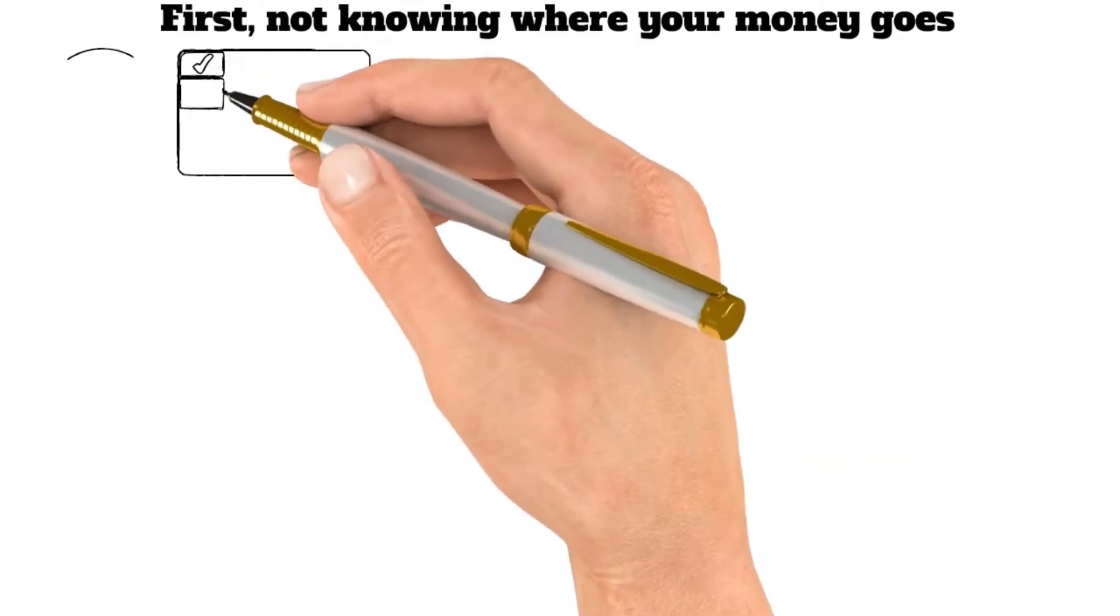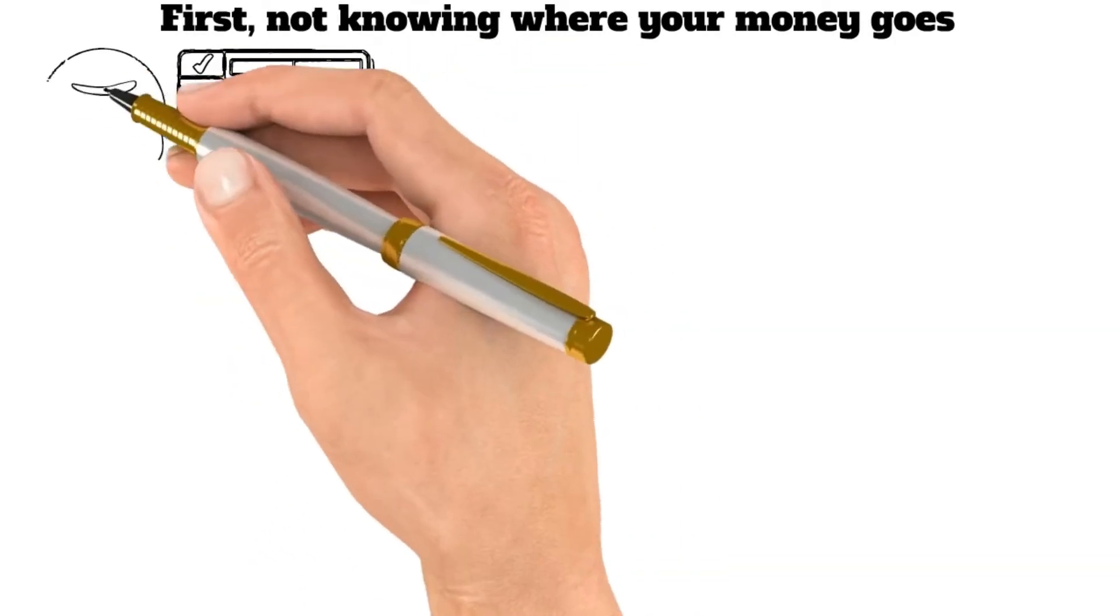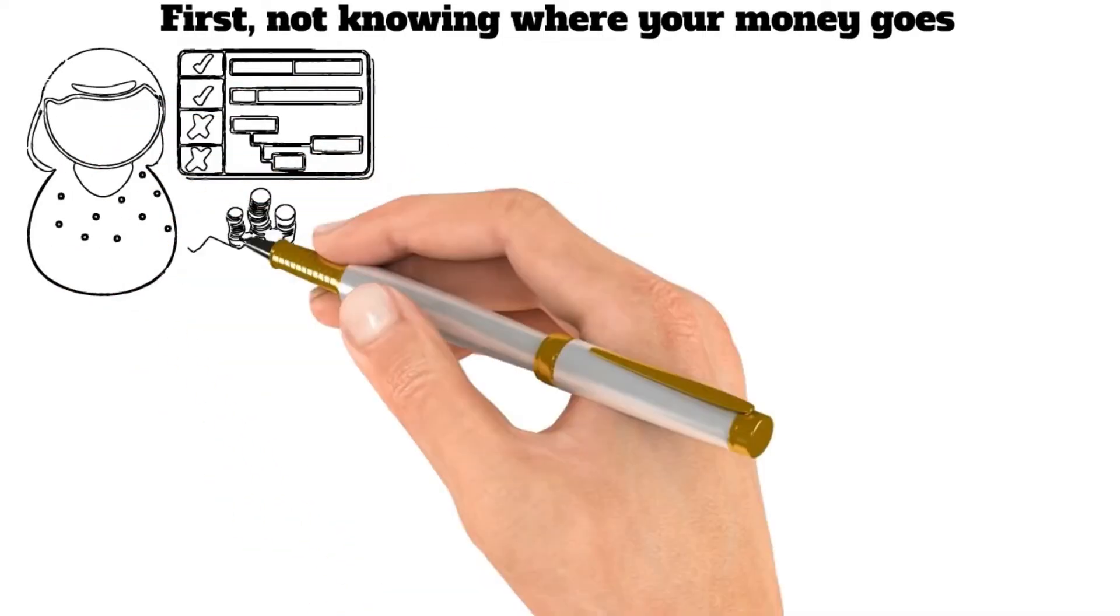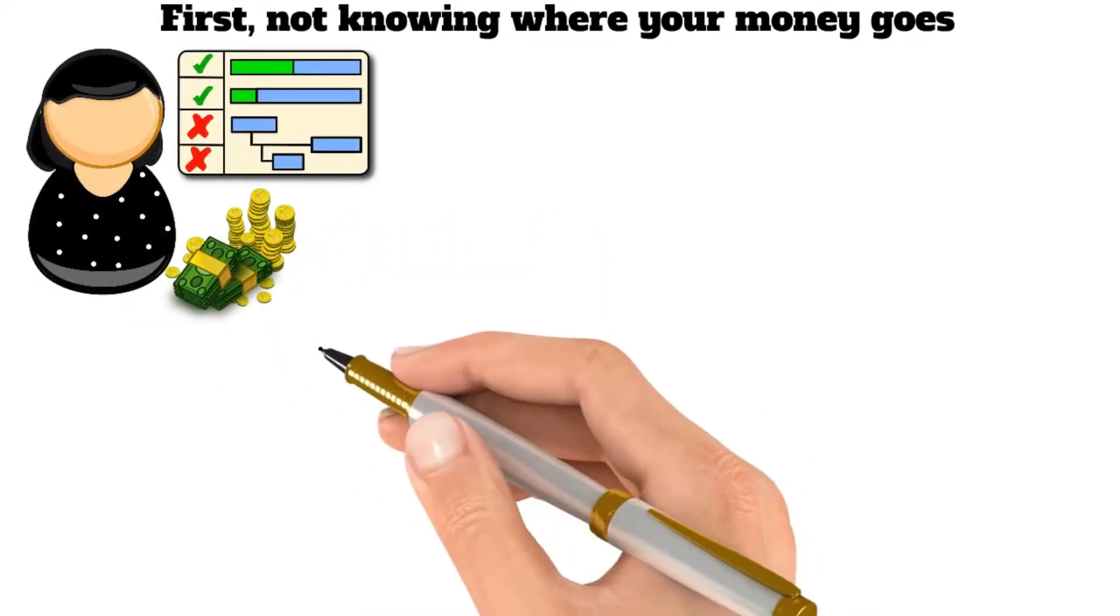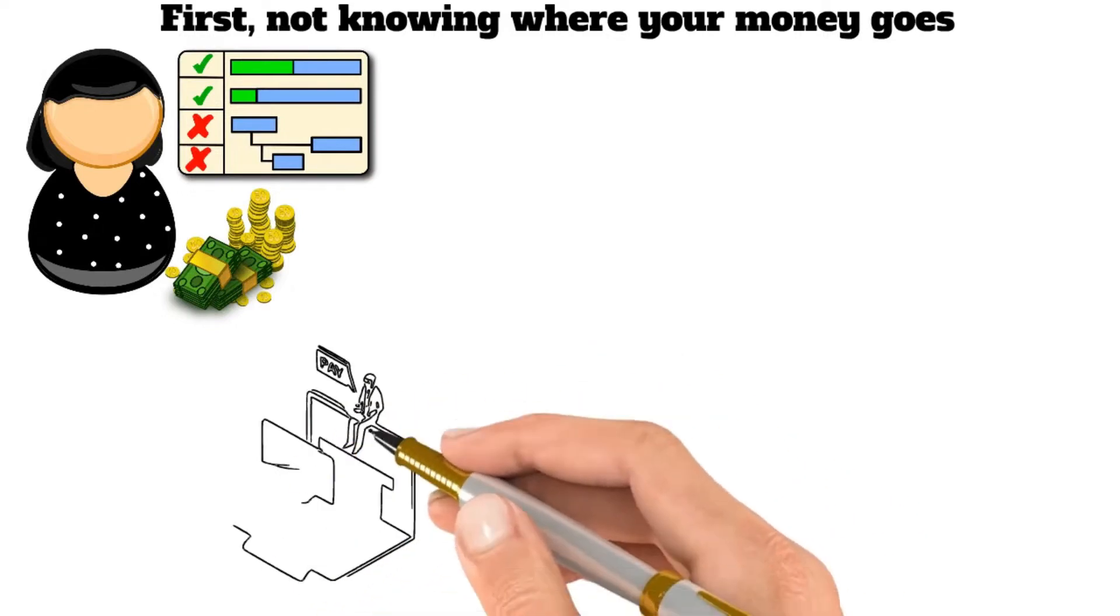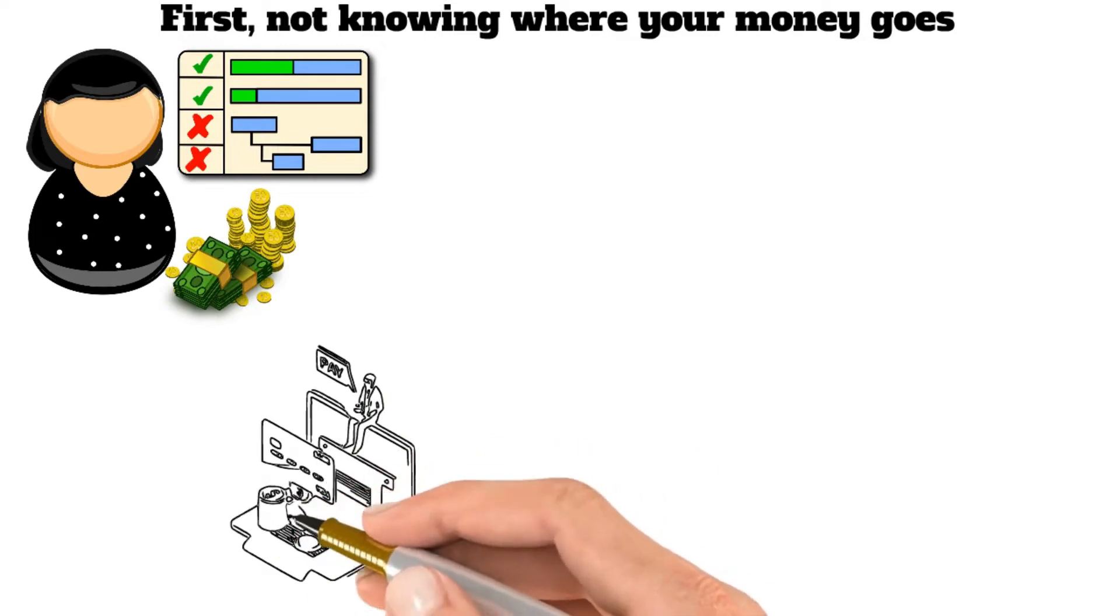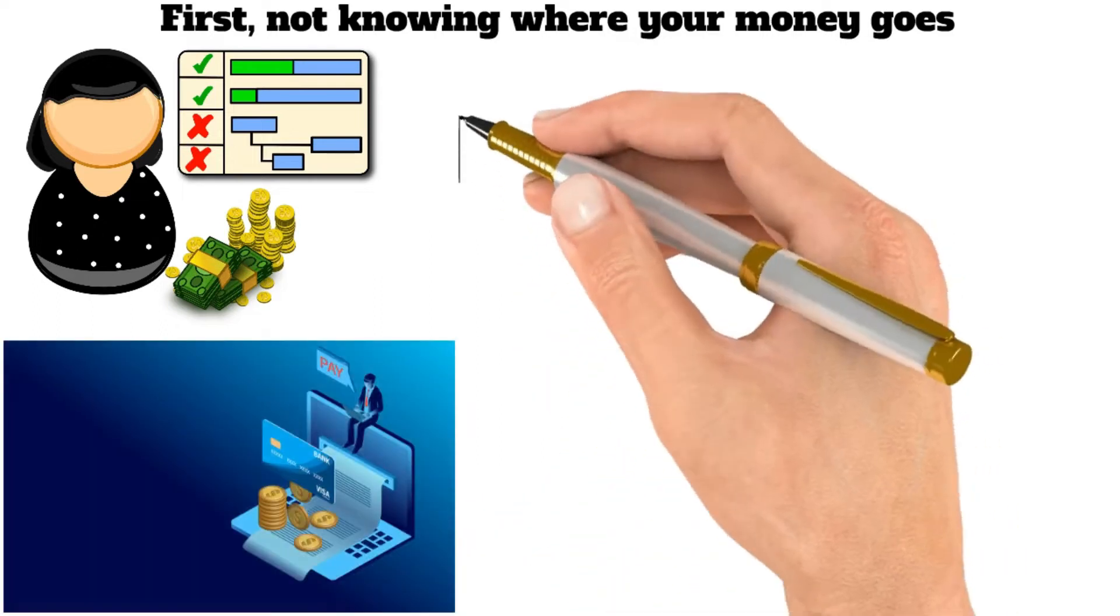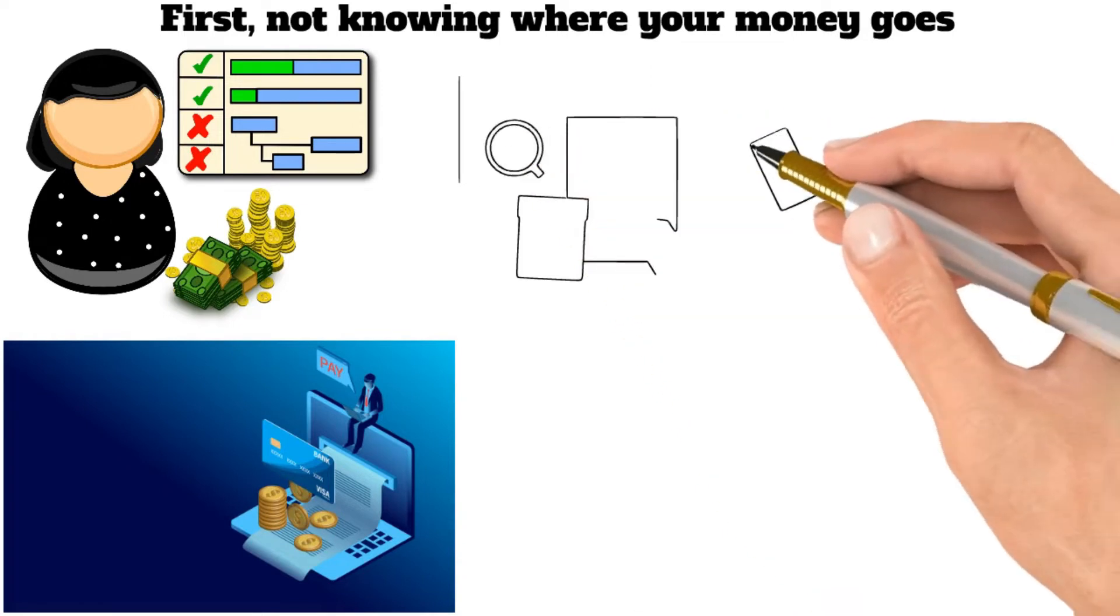Money management is key to preventing financial difficulties. Unfortunately, many people do not have a good handle on their finances, and as a result, they find themselves in difficult situations. One of the main reasons people find themselves in this situation is that they do not know where their money goes. This causes them to overspend and rack up debt they cannot afford to repay. Not tracking your money is a dangerous habit that can lead to financial difficulties down the road.